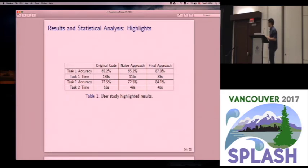So I have some highlight results. The detailed tables are in our paper. So basically, I want to say our approach provides better accuracy compared to the original code and the abridgment generated by the strawman, and people just need less time to view the source code generated by our source code abridgment method.